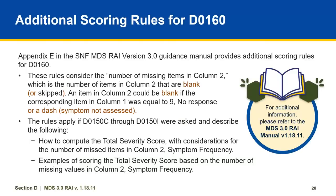Appendix E in the SNF MDS RAI version 3.0 guidance manual provides additional scoring rules for D0160. These rules consider the number of missing items in column 2 — items that are blank or skipped. An item in column 2 could be blank if the corresponding item in column 1 was equal to 9 (no response) or a dash (symptom not assessed). These rules apply if D0150C through D0150I were asked, and describe how to compute the total severity score with consideration for missing items, as well as examples of scoring based on the number of missing values.